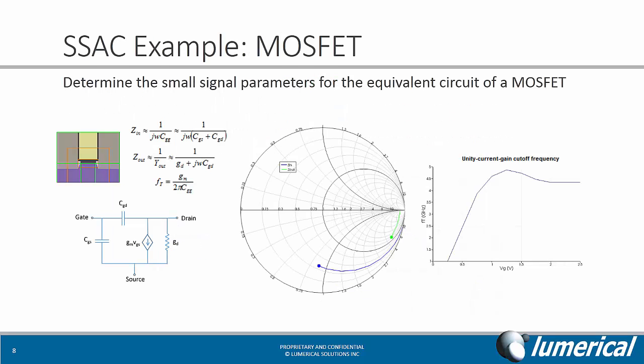A more interesting example for small signal AC analysis is the MOSFET, where you might want to determine the small signal parameters and extract the equivalent circuit representation. The values for the parameters can be calculated from the input and output impedance, shown here in the Smith chart, as well as the unity current gain curve. These are the typical results for a small signal AC simulation, and the results can be calculated automatically by Device.